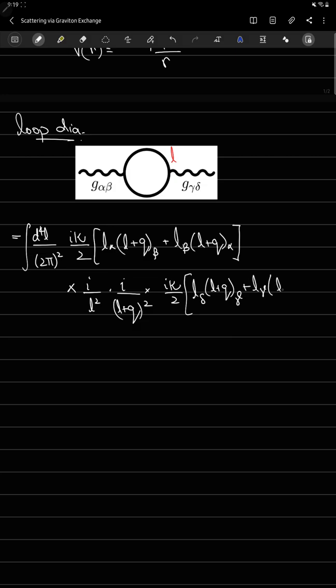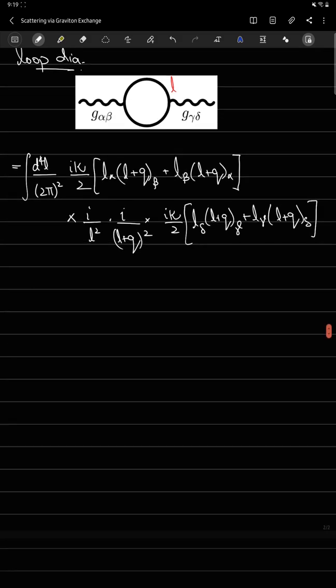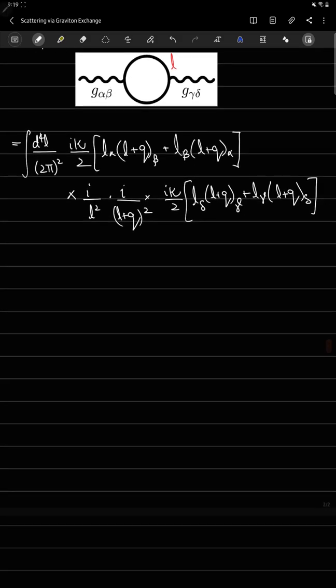If you were to evaluate this integral or compute this loop, you'll arrive at a result that has a form of kappa squared over 16 pi squared times q gamma q delta q alpha q beta. You'll have these four terms, and you'll have a 1 over epsilon plus natural log of q squared. You can see the similarity of this loop if you were to compare it with a loop in QED or quantum electrodynamics.